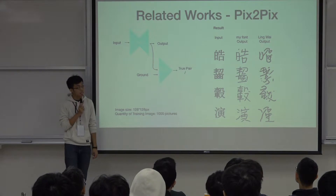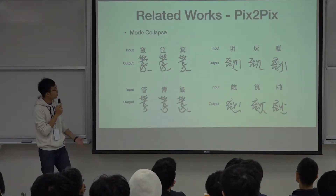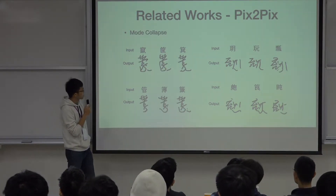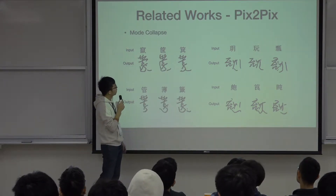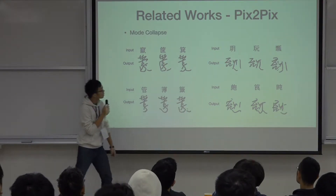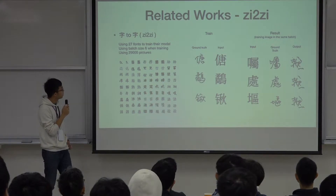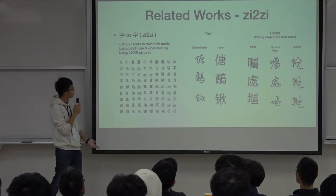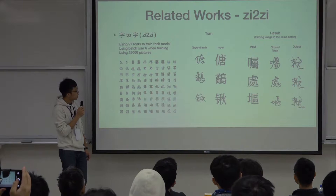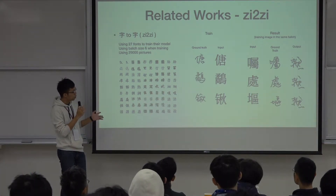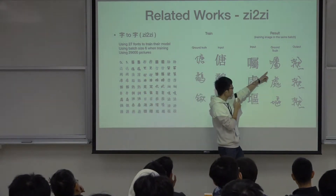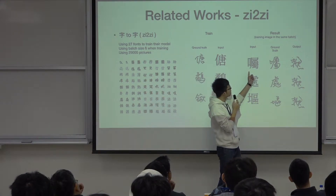Another project is Zi2Zi. In pixel-to-pixel, we also found that on the Countable platform, no matter what input we give, it always produces the same output. In the Zi2Zi project, they use 27 fonts to train their model, using a large batch size and many pictures. However, the paper also states they need the two fonts to have the same structure. So if the structure is much more different from the original, the result won't be good.